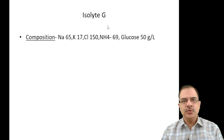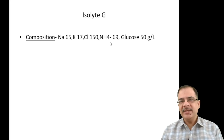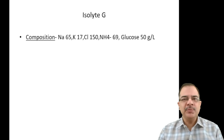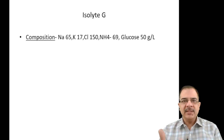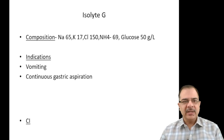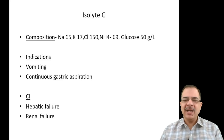Isolyte G — 'G' stands for gastric — is given when there is a large daily gastric aspirate. Composition: sodium 65, potassium 17, chloride 150, and ammonium ion 69 mEq/L. The ammonium ion dissociates to provide H+ to the body, causing acidosis. This makes it ideal for severe alkalosis from excessive vomiting or nasogastric aspiration. Contraindications include hepatic failure (ammonia triggers encephalopathy), renal failure (aggravates acidosis), and metabolic acidosis.